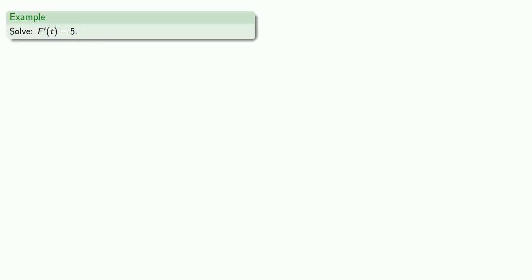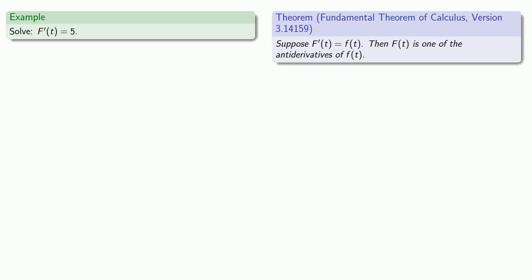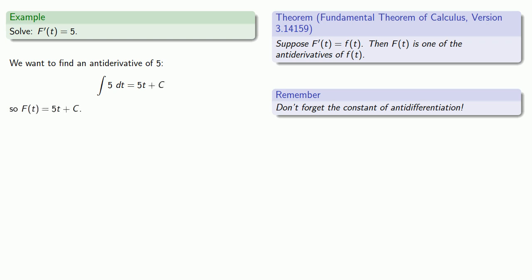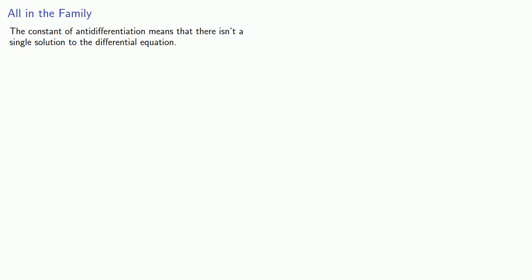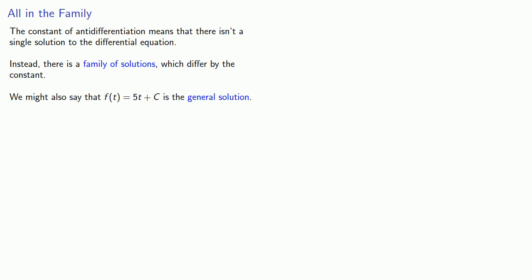Let's try to solve f prime of t equals 5. The fundamental theorem of calculus says that if we know the derivative, then the function is going to be one of the antiderivatives. We want to find an antiderivative of 5, which is 5t. But anytime we find an antiderivative, there's always a constant of antidifferentiation, so our antiderivative is 5t plus c, and our function is 5t plus c. This is the general solution.